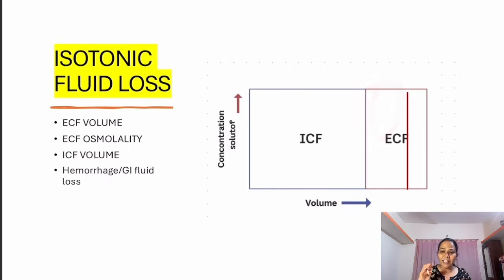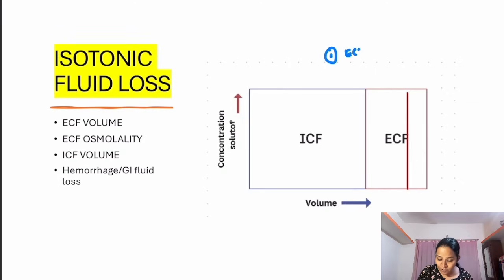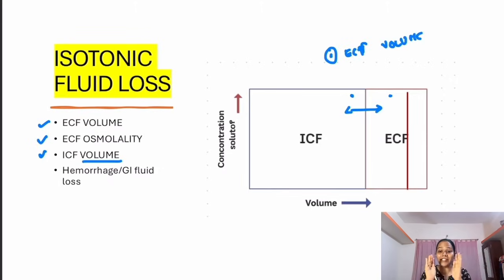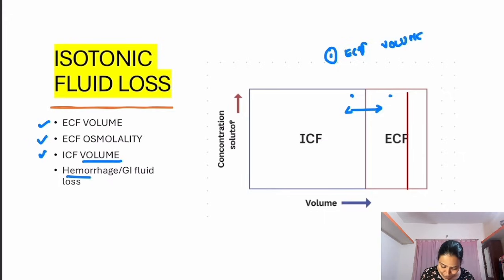For any question on the Darrow-Yannet Diagram, here are simple steps to decode it. First, look at ECF volume. Second, assess ECF osmolality. Third, check ICF volume only — not ICF osmolality, because osmolality is supposed to be equal between the two compartments. Whatever ECF osmolality is, ICF osmolality becomes the same. So you only check three things: ECF volume, ECF osmolality, and ICF volume.